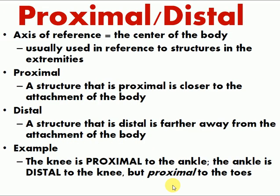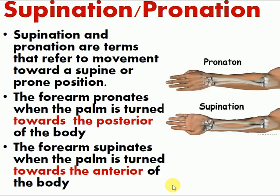Proximal and distal: the axis of reference is the center of the body. Proximal means near the attachment of the limb to the body; distal means far from the attachment. For example, the ankle joint is distal to the knee joint but proximal to the toes. Conversely, the knee joint is proximal to the ankle joint. We consider the position of a structure and its attachment to determine which is closer to the body.